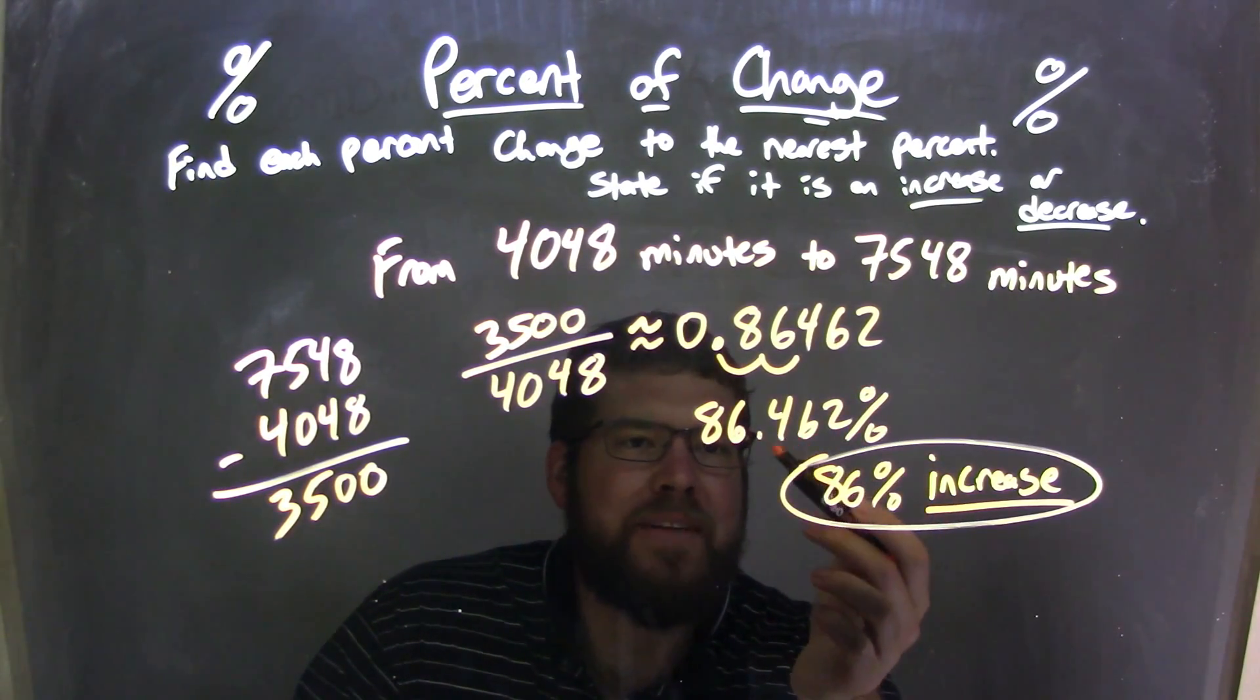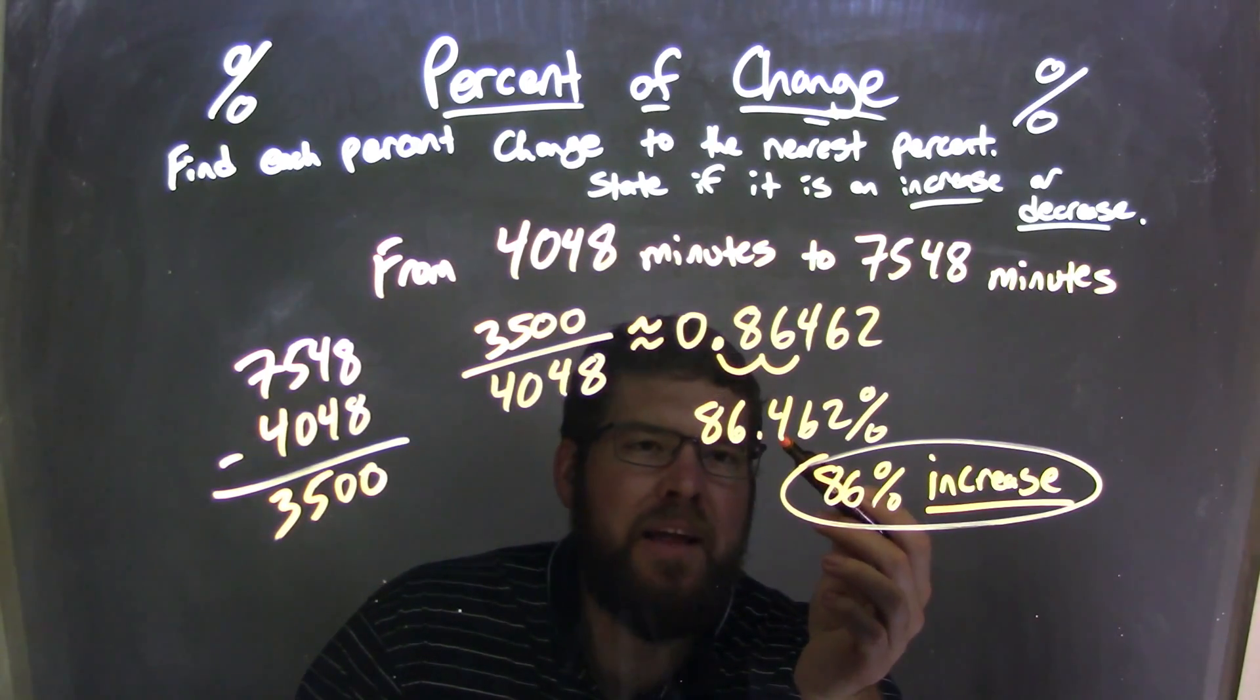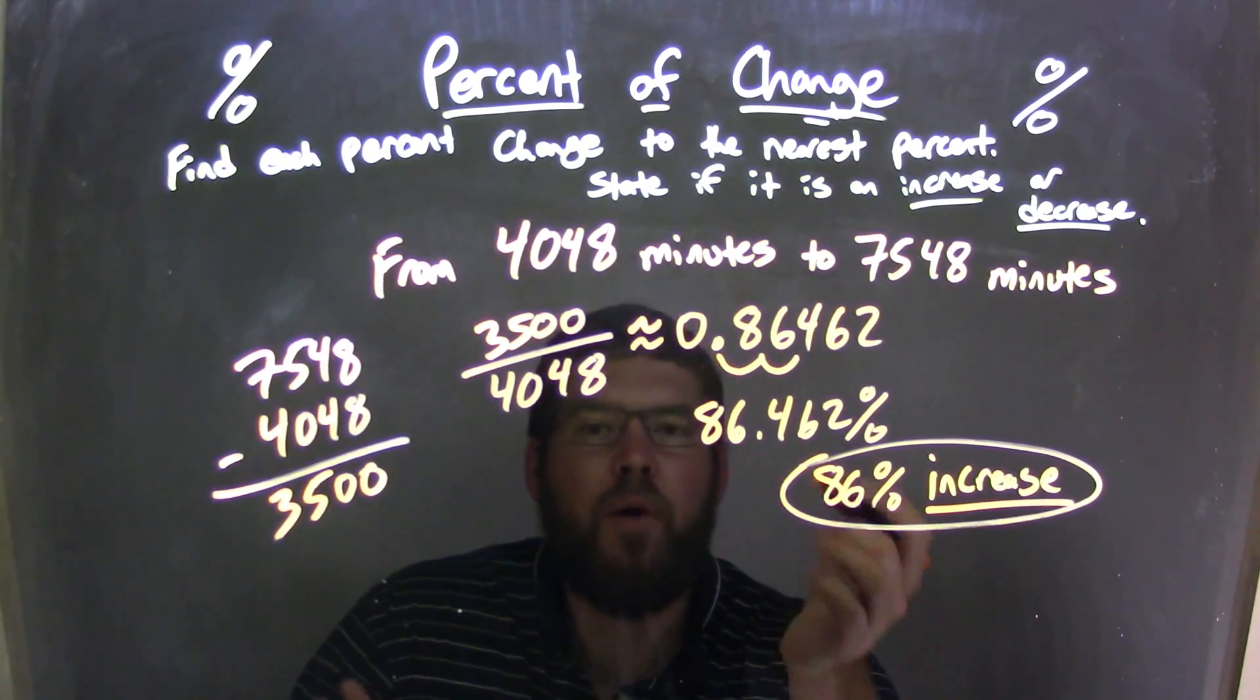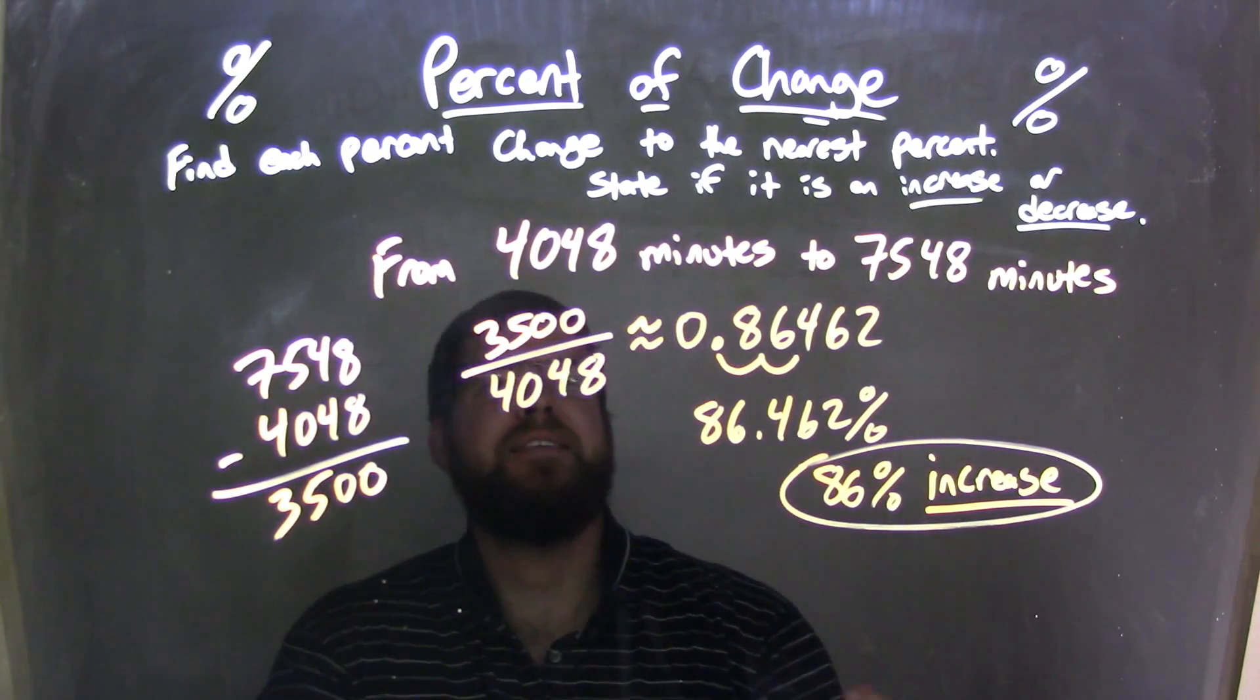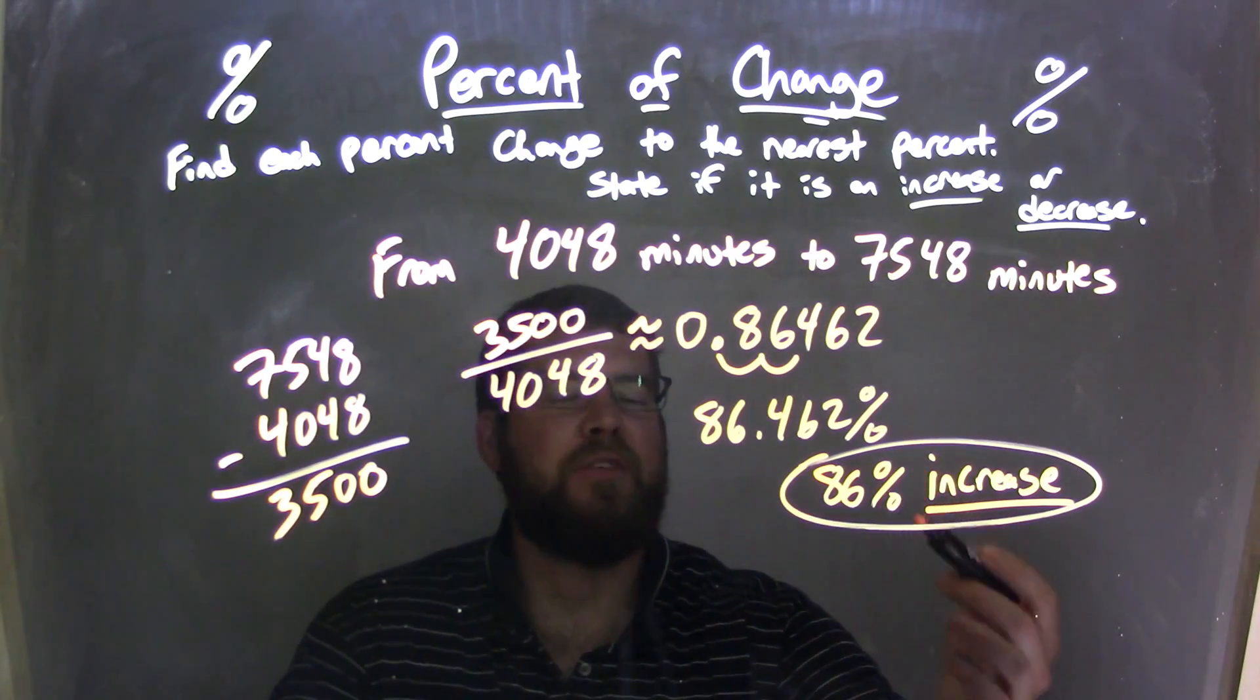I needed to round that. So I look at the tens position here and that 0.4 rounds the 6 down. So we're left with just 86 percent. So our final answer here when it's all said and done is an 86 percent increase.